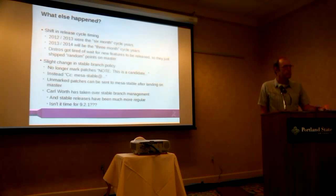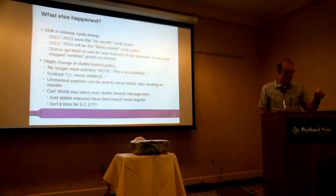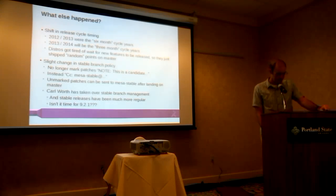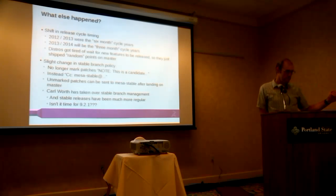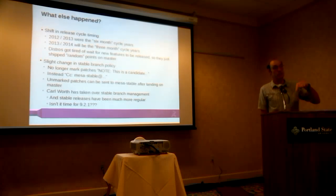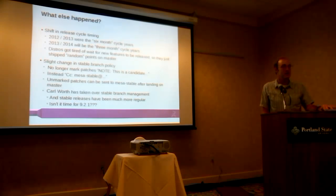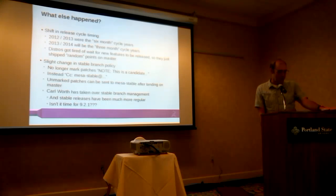We've also changed our stable release and stable branch policies. We actually have a release manager — Carl Wirth, way in the back of the room — who has taken over doing the stable releases and done a fine job getting out a bunch of 9.1 releases. Rather than just marking patches with a note in the commit message, we've started CC-ing them to a Mesa stable mailing list, so they show up in the mailing list record. And if a patch that isn't marked is later determined to fix some bug we want back in the stable release, someone can nominate it by sending it to that stable list — instead of sending me a message on IRC that I won't remember anyway.